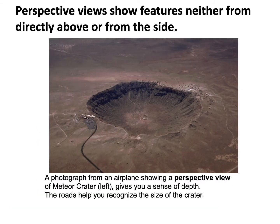We're going to use a common feature to illustrate these different types of diagrams. What we're looking at here is Meteor Crater, also called Barringer Crater, in New Mexico. This image is a photograph from an airplane that shows a perspective view of the crater — it's not taken from directly above or directly from the side. A useful aspect of a perspective view is that it gives you a sense of the depth of the crater, and it shows objects that give you some sense of scale, such as the paved road in black, a parking lot, and a few cars looking very, very small.